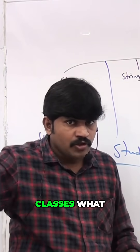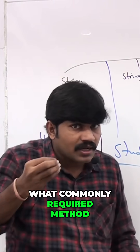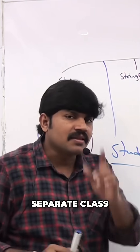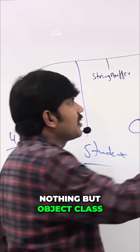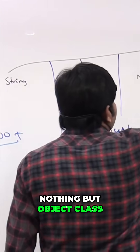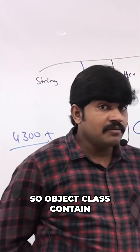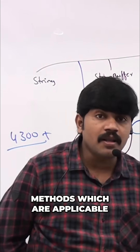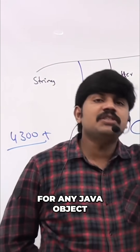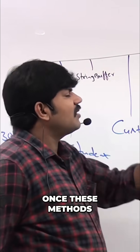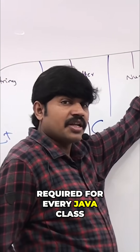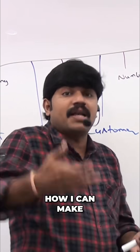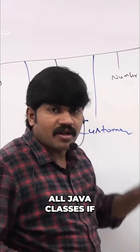For all Java classes, the most commonly required methods are defined inside a separate class. That separate class is nothing but the Object class. Object class contains the most commonly required methods which are applicable for any Java object. Now, how can we make these methods available for all Java classes?